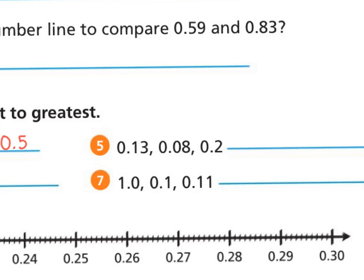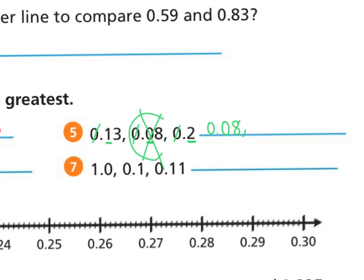Let's look at number five and use our crossing-out trick again. Looking at my whole number — I don't have any whole numbers, but we always have to check and make sure. Now I'm going to compare my decimals, looking just at the tenths spot: I've got a one, a zero, and a two. Zero is the smallest, so I start with zero and eight hundredths. Then one is smaller than two, so zero and thirteen hundredths, and finally zero and two tenths.